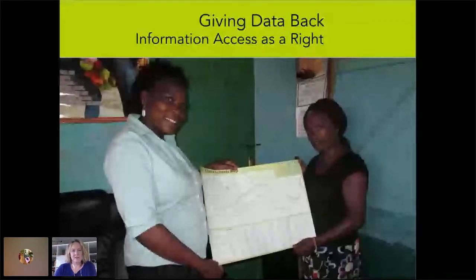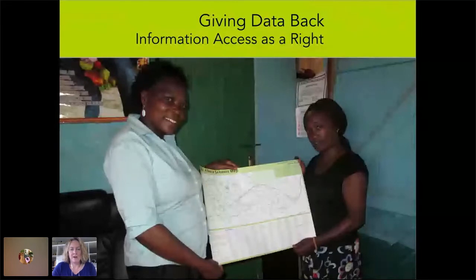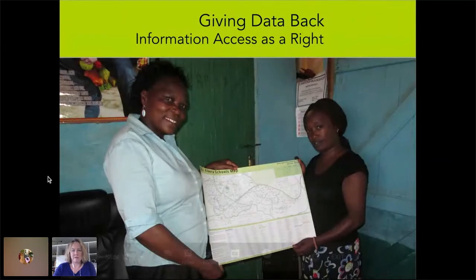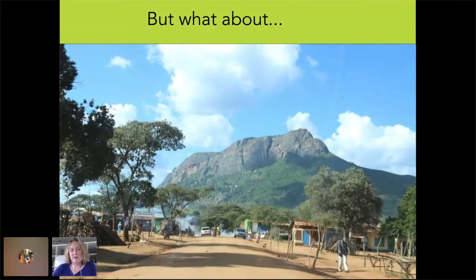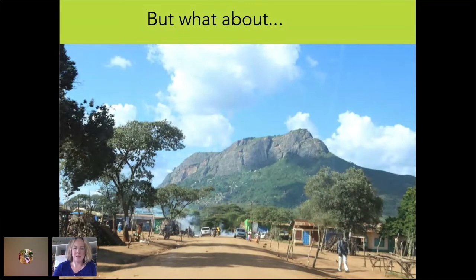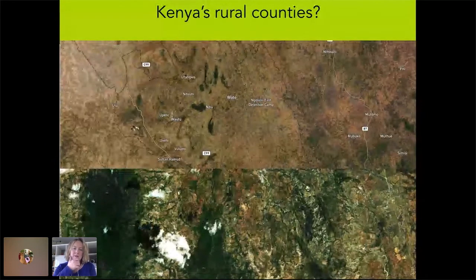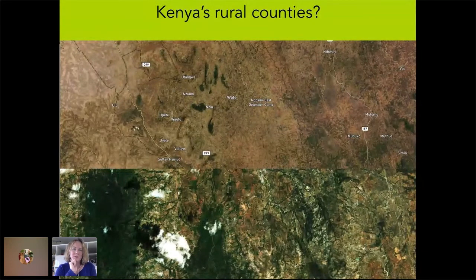This is a teacher on the left receiving a printed map of that school's data collection, which she took part in. And this is Lucy, one of our team on the right, who was one of our original 13 and still works for the organization. But what about a place like this? We worked a lot in urban areas where mobile phones and internet have become more accessible over time, and there's a lot of awareness of what technology can do.